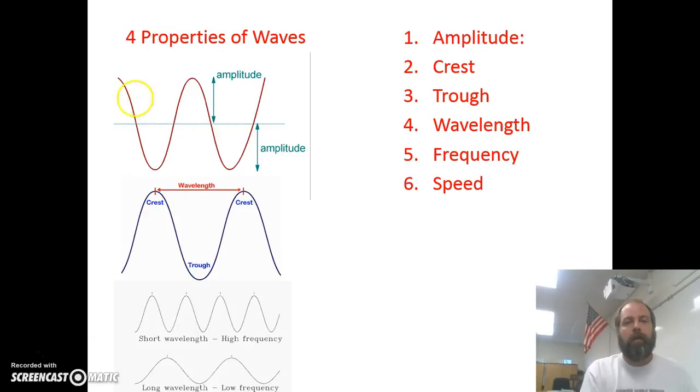Crest is the tops of the waves. If you look at this, we got the crest, we got the crest, we have the crest. The crest is the top of the wave. The trough would be the bottom part of the wave. We got the trough, we got a trough, and we got a trough.